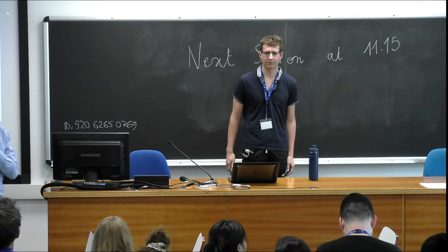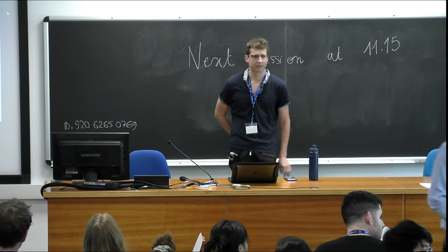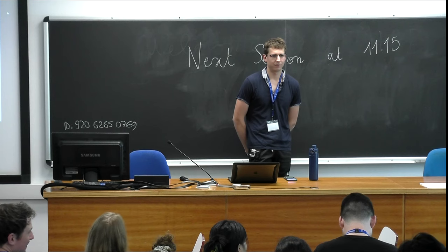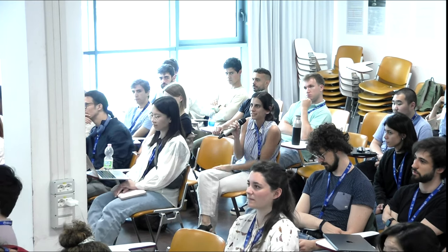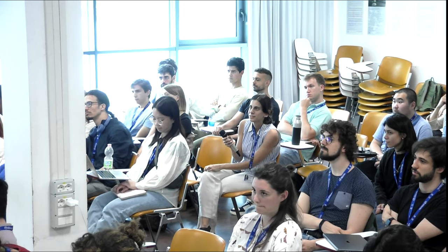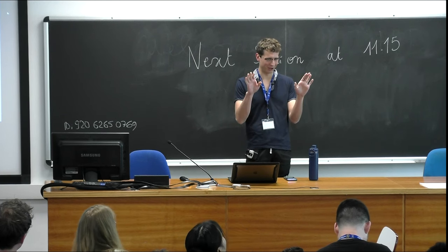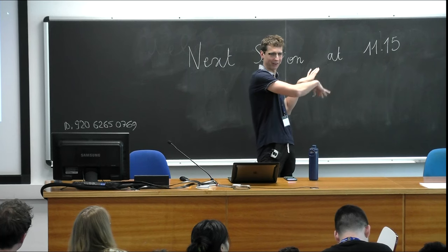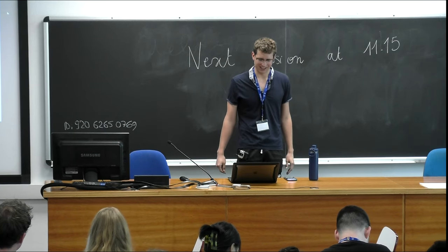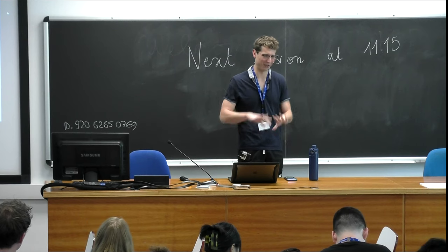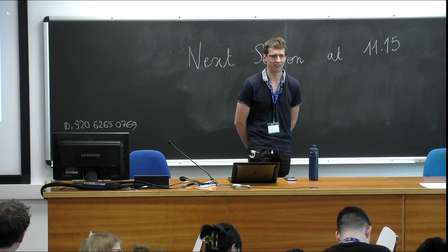We have time for a couple of quick questions. Question: in all those recurrent networks, are the synaptic weights biologically set as excitatory or inhibitory neurons, or are those free? Answer: one of the many biological facts I'm ignoring is the excitatory-inhibitory split. In reality, Dale's law says that columns of the synaptic weight matrix would be all positive or all negative because neurons are excitatory or inhibitory. I'm ignoring that — there's no EI split in this work.